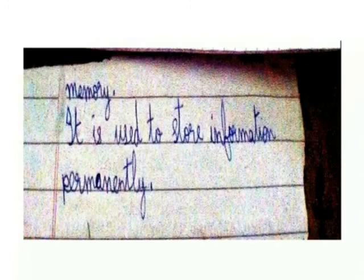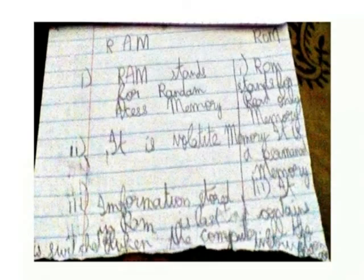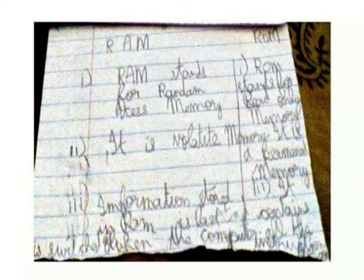What are the differences between RAM and ROM? RAM stands for Random Access Memory. It is volatile memory. Information stored in RAM is erased when the computer is off. ROM stands for Read-Only Memory. It is permanent memory. It contains all the instructions to the computer.